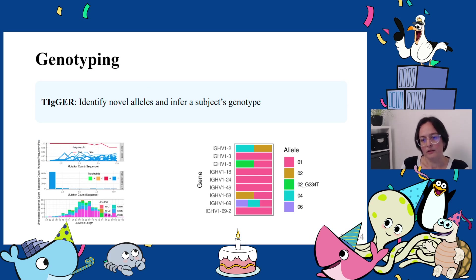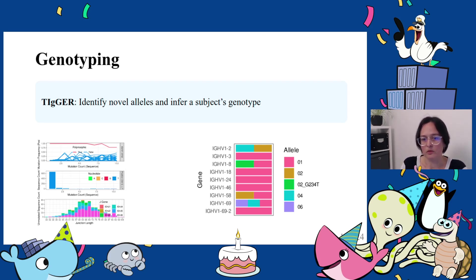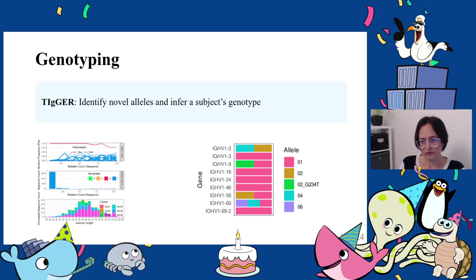The step of identifying the VDJ genes correctly is very important, and it is done by matching the sequences against a database of known VDJ genes. However, current databases are incomplete, and some assignments might also occur to genes not carried by the individual due to errors or ambiguities. The Tigger R package contains methods to infer subject-specific genotypes, including novel alleles, and then uses these results to improve the gene annotations.